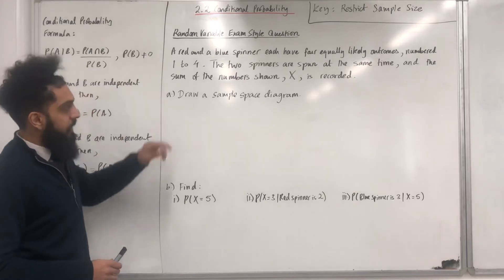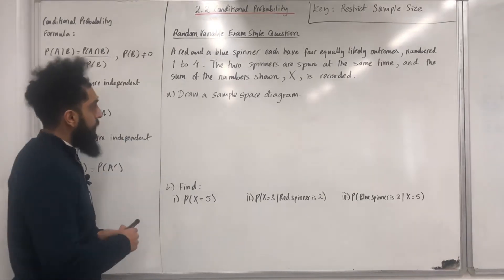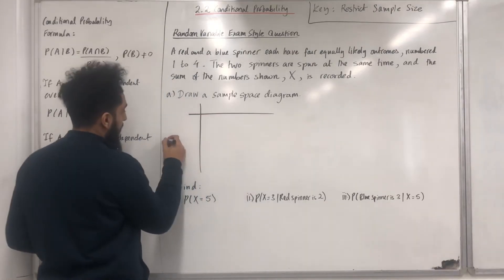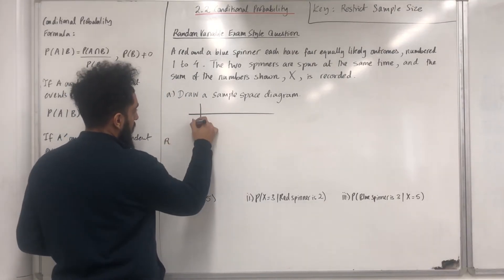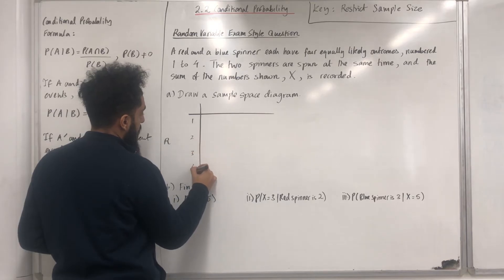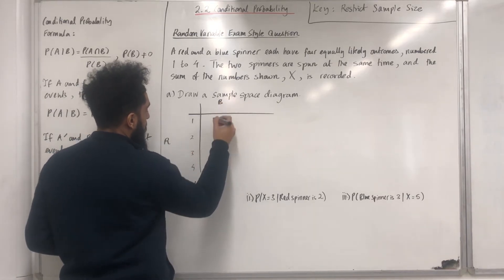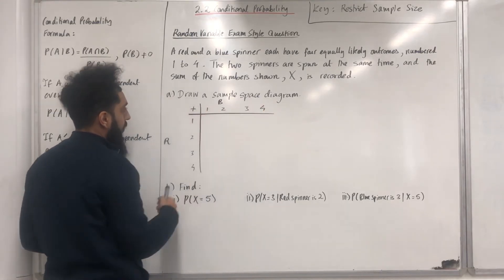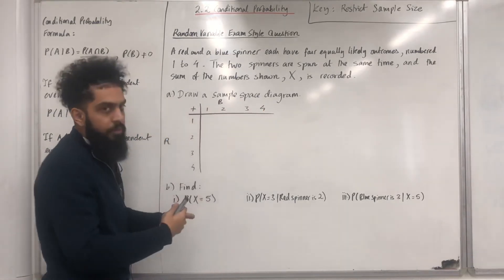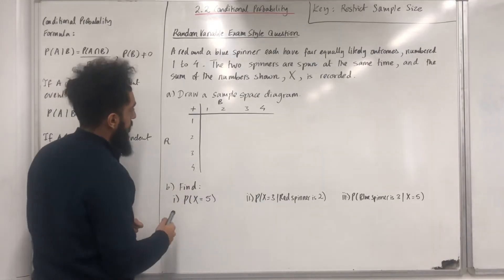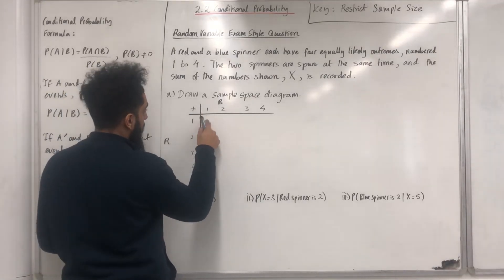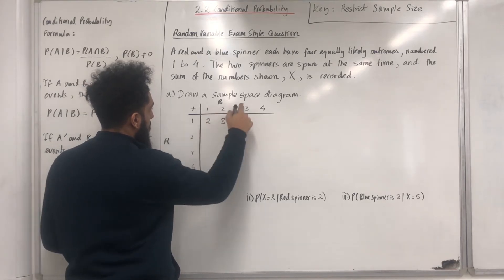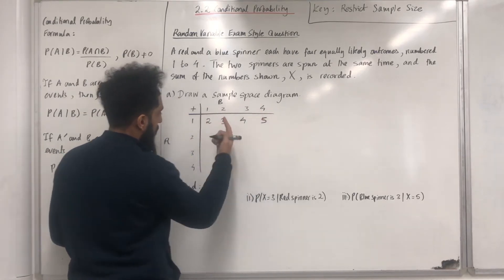The sample space diagram has the red spinner values 1, 2, 3, 4 and the blue spinner values 1, 2, 3, 4. We take the sum of each pair of outcomes, which represents X. So: 1+1=2, 1+2=3, 1+3=4, 1+4=5, and so on.